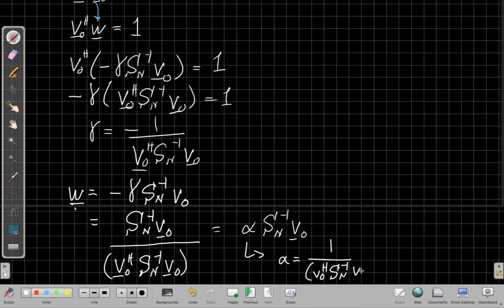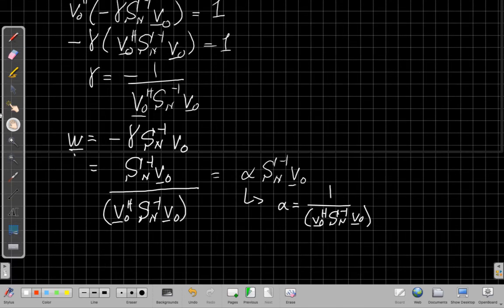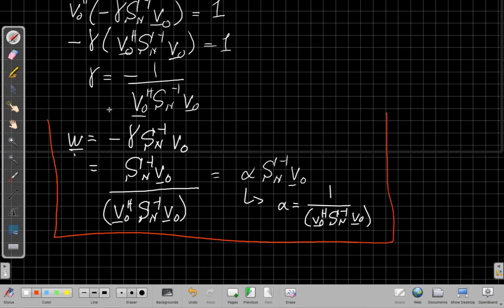That's the scaling factor for unity gain that looks like this. Partly because it's simpler to write this alpha if we're going to be carrying it around a lot than writing this over and over again. So these are very important. These are the array weights for the minimum variance distortionless response beamformer. So I don't do that often, but it's an important enough beamformer. I'm going to put a red box around all of this.